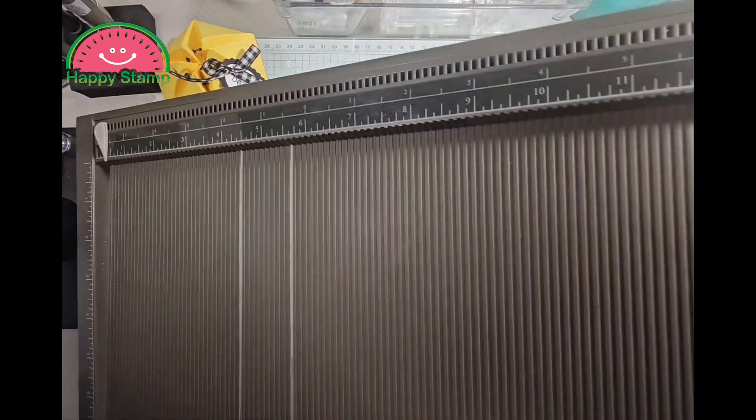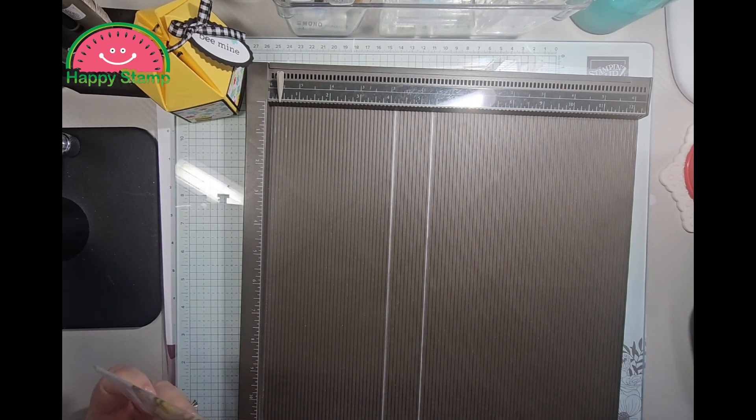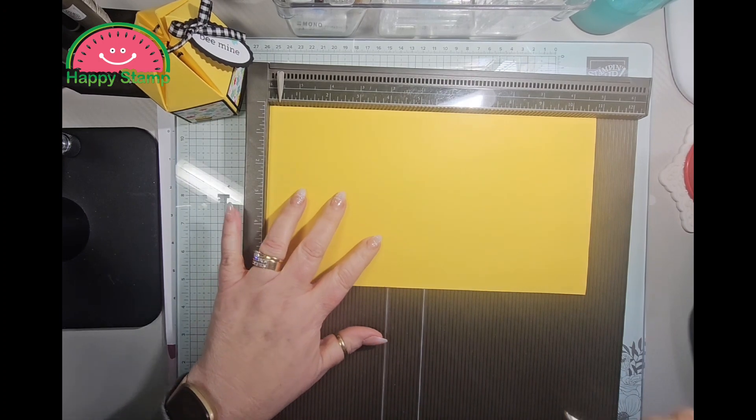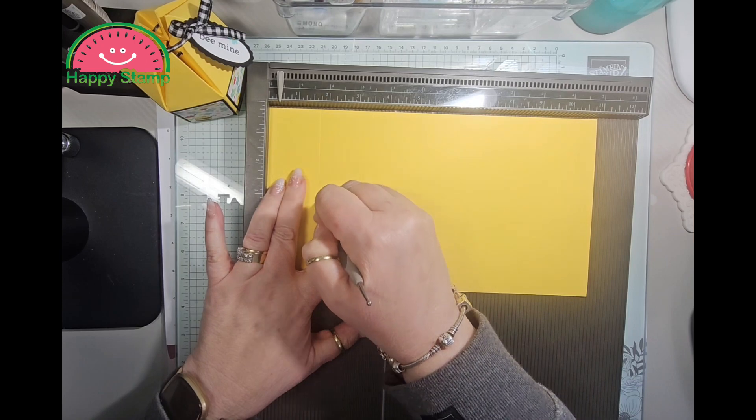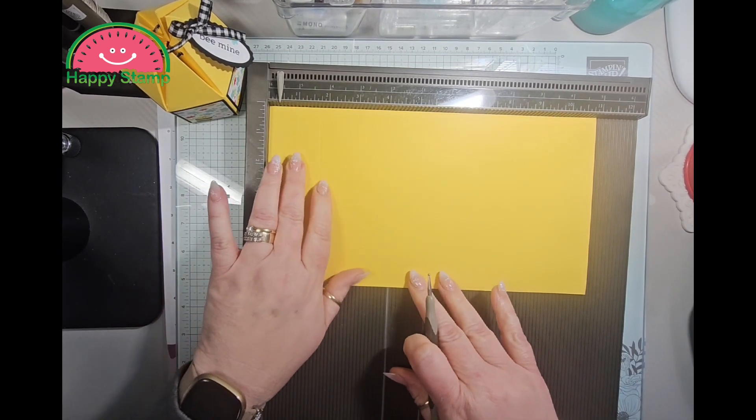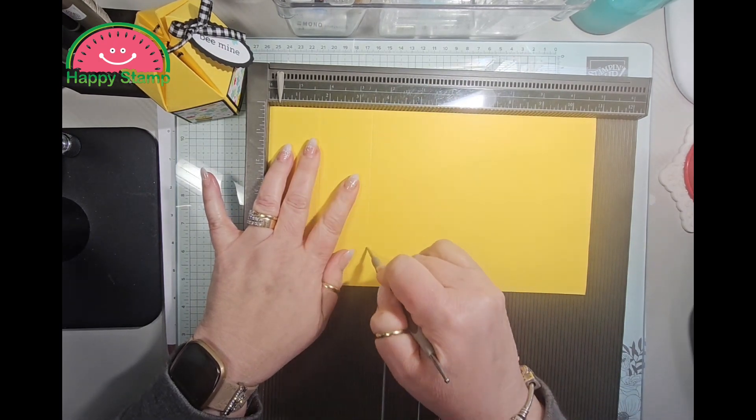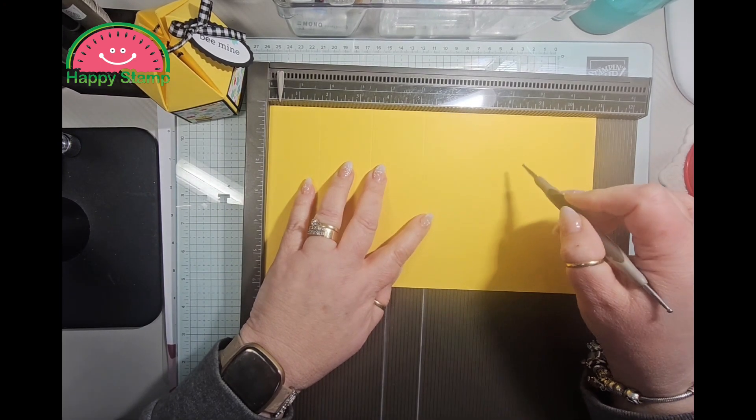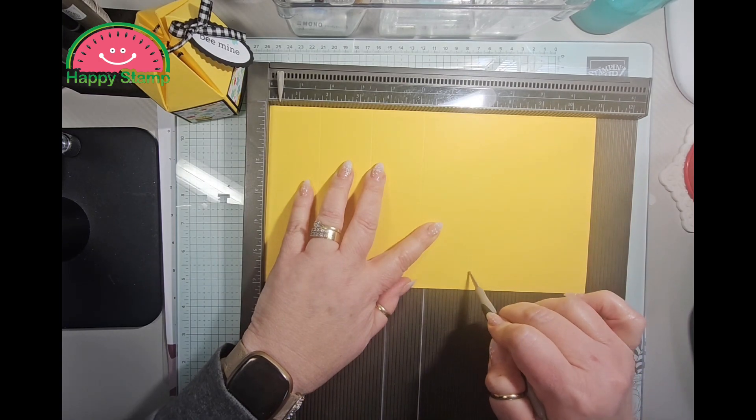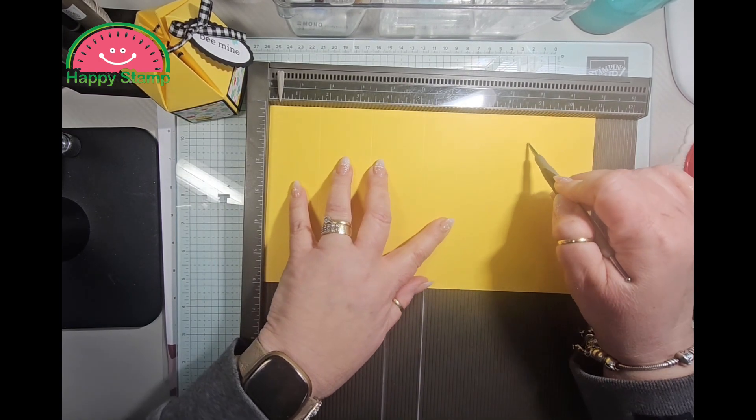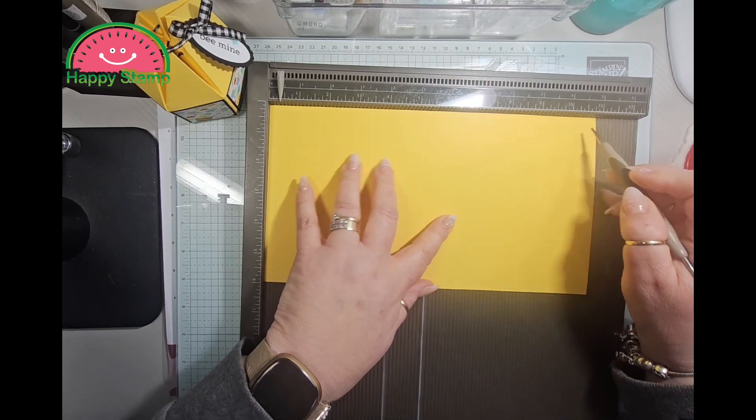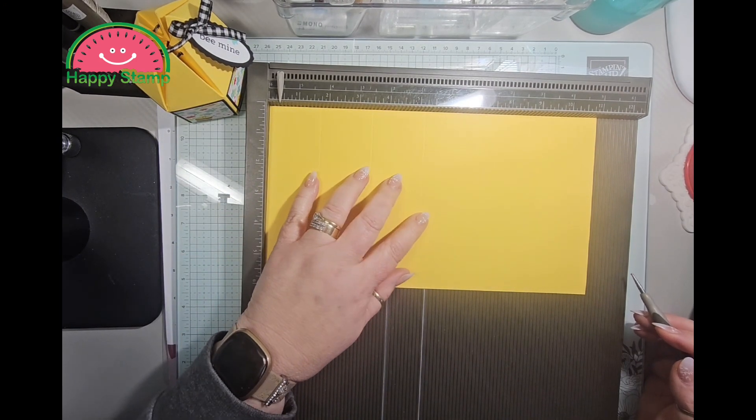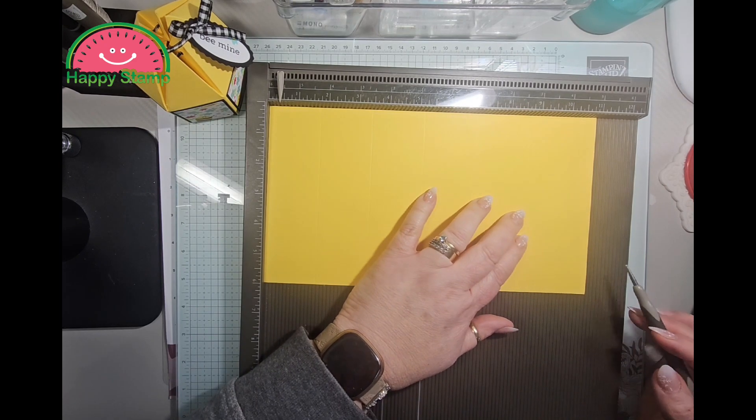On the eleven inch side we are going to score at one and three quarters, three and a half, five and a quarter, seven, eight and three quarters, and ten and a half. So again, one and three quarters, three and a half, five and a quarter, seven, eight and three quarters, and ten and a half.